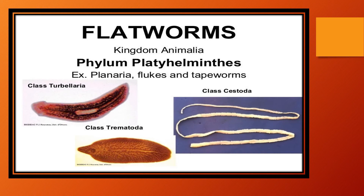Here you can see some worms. When we study their classification, there are three classes. This is Class Turbellaria — an example is Planaria. This is a liver fluke, which belongs to Class Trematoda. And this one is Class Cestoda, an example of which is the tapeworm.